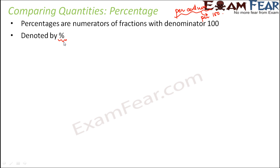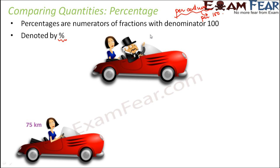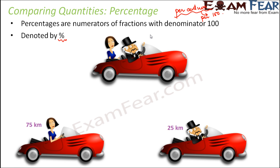Let's look at this example. Let's again talk about Mr. and Mrs. Smith who went out on a long drive. Let's say that they went on a long drive of 100 kilometers. Mrs. Smith drove for 75 kilometers and the remaining 25 kilometers was driven by Mr. Smith. Now if I have to represent what percentage of the entire journey was covered by Mrs. Smith, how would you calculate that percentage?